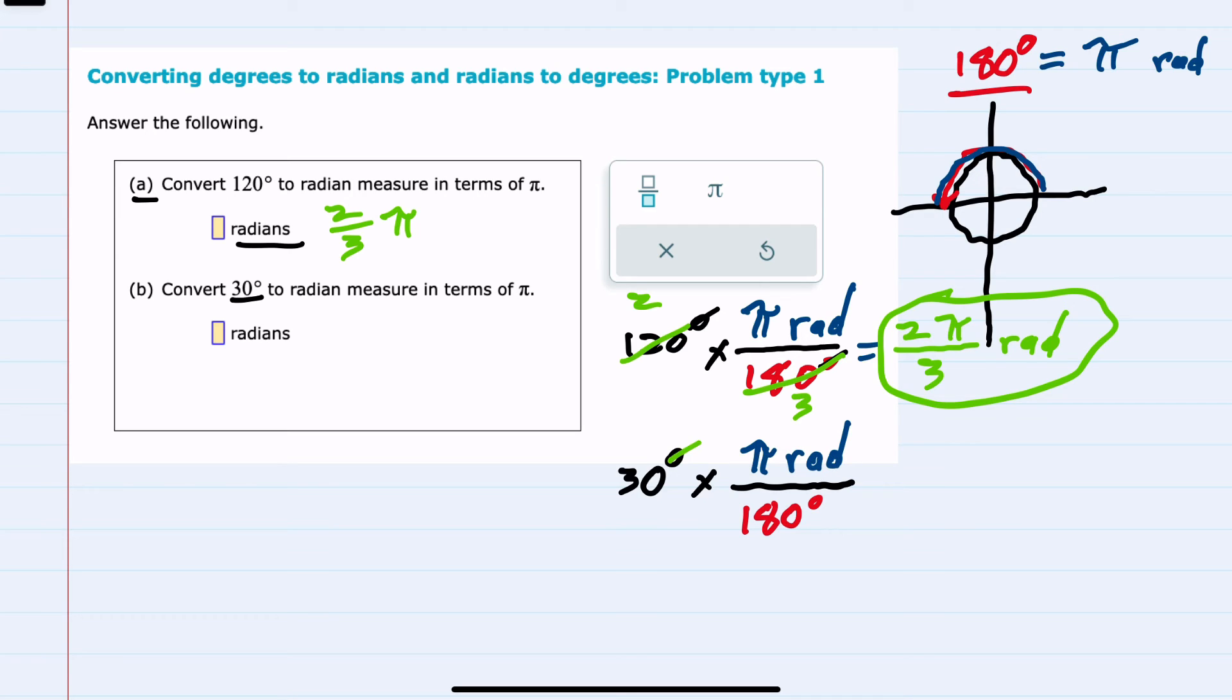Here again, the degrees cancel. 30 and 180 are both divisible by 30. 30 goes into 30 once, and 180 six times. So multiplying across, we have pi radians in the numerator, and 6 in the denominator. So pi sixth radians is that conversion.